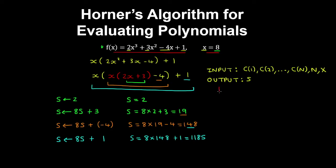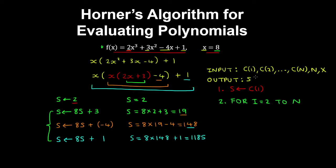In the first line, we initialize s to be the first coefficient in the polynomial, as we've done here. Next, we have a repeated calculation, so we can use a for loop. We start with i equals 2 to n, since we've already used the first coefficient and start the loop by indexing the second coefficient in the array.